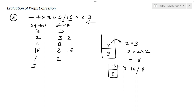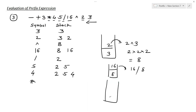The next symbol is 5 — it goes into the stack. We already have 2, and now 5 is added. The next symbol is 4, so the stack has 2, 5, and 4. The next symbol is multiplication. We pop the topmost operands: 4 and 5. So 4 multiplied by 5 equals 20.